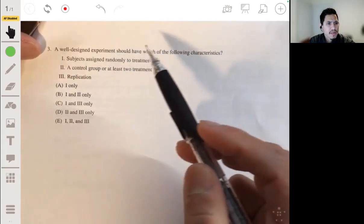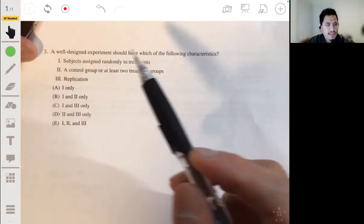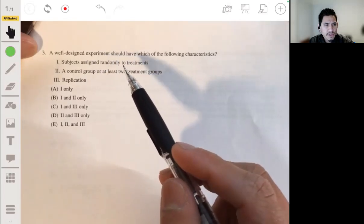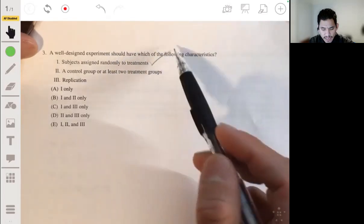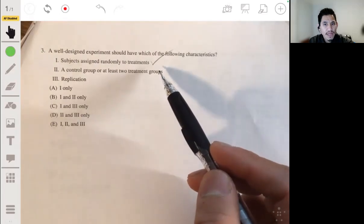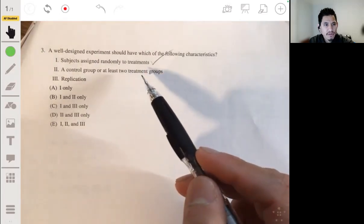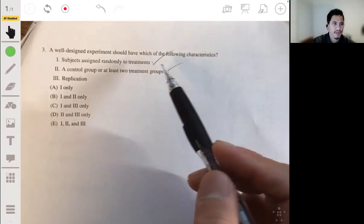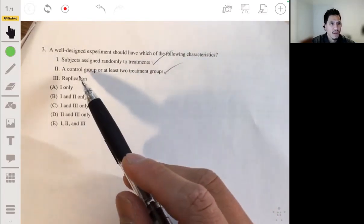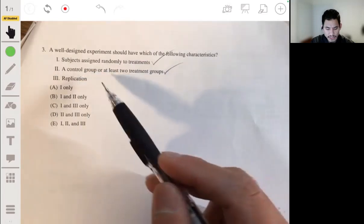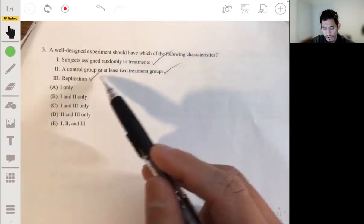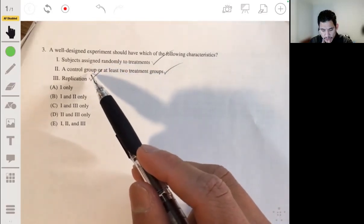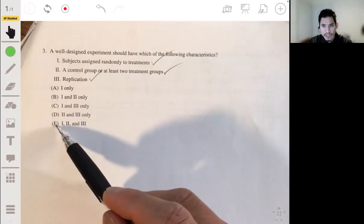Three, a well-designed experiment should have which of the following characteristics? Subjects randomly assign treatments. That has to be a component. A control group or at least two treatment groups. Yeah, because you have to test something. You're trying to test the effect of something. And through your application, it has to have all three of these, at least, to be good experiments. So it would be one, two, and three. So it would be E.